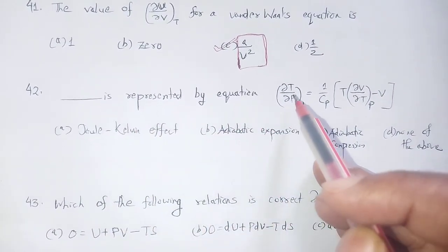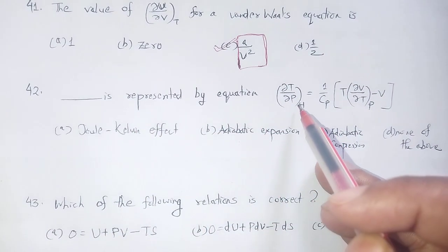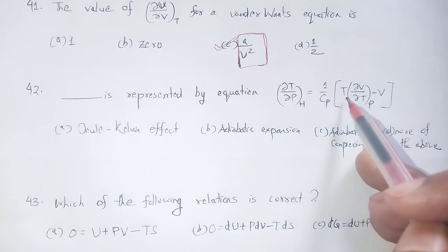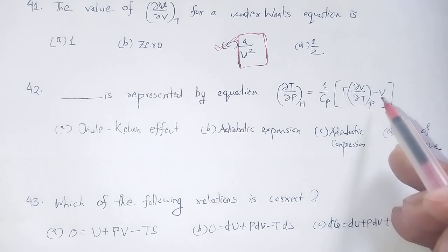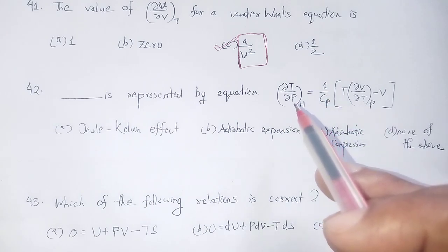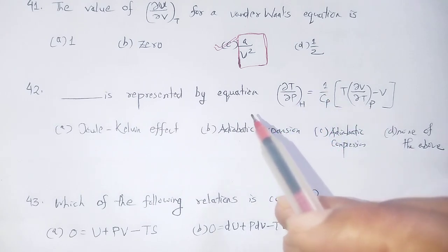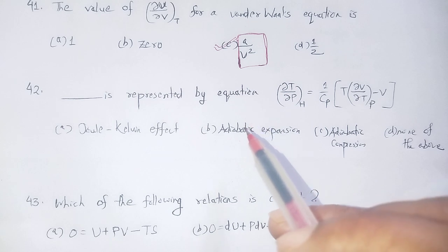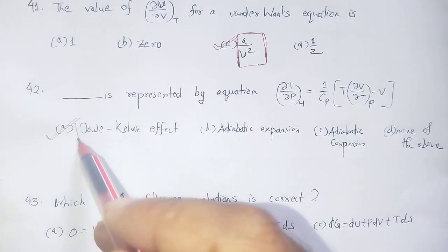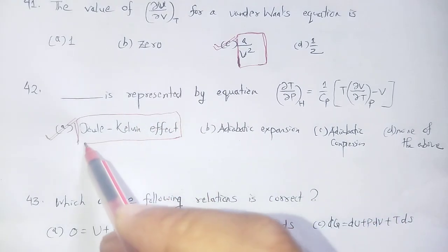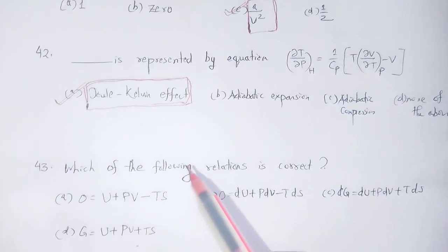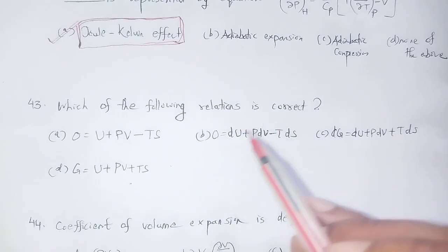The Joule-Kelvin effect is represented by the equation: del T by del P at constant S is equal to (1/Cp) times T times (del V/del T at constant pressure minus V). Option number A is correct. You have to remember that equation for the Joule-Kelvin effect.